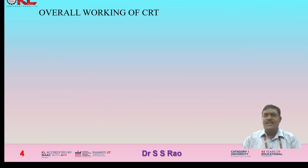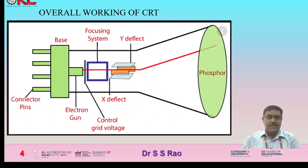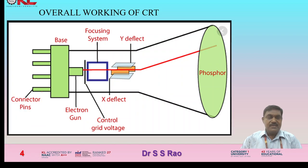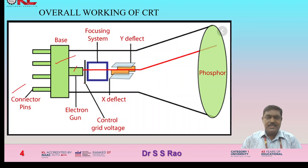Now let us look at the overall working of the CRT using this diagram. The connector pins are where you supply power to the CRT monitor, and the base is where all the electron guns and glass tubes are mounted. The electron gun sends electrons through the control grid voltage, and this entire unit constitutes the focusing system.